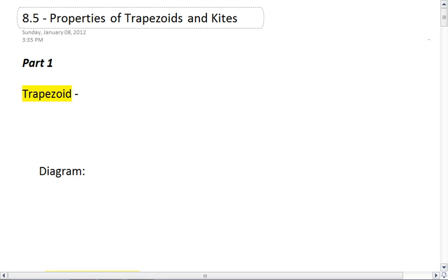Section 8.5, Properties of Trapezoids and Kites. Part 1, we're going to be looking at trapezoids.